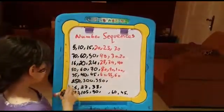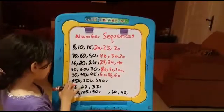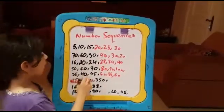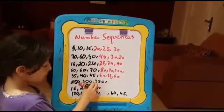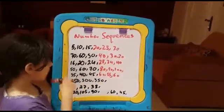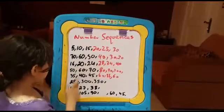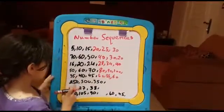Now here we have 250 and 350. The next three numbers, the rule is adding 50.